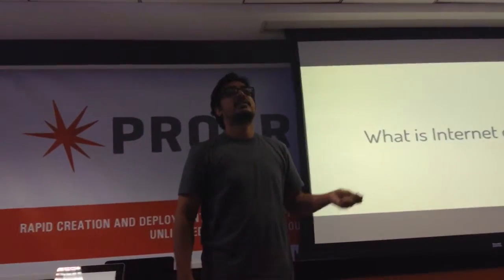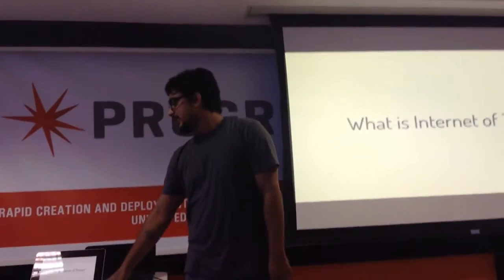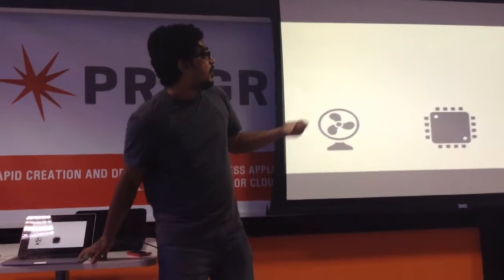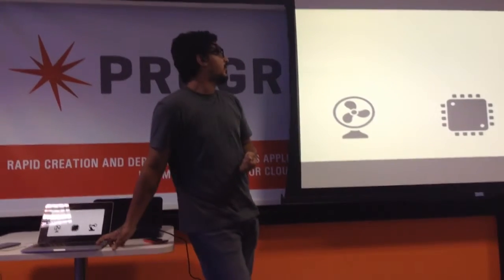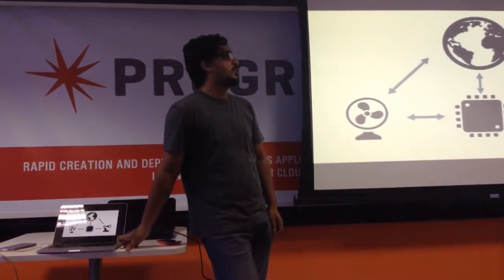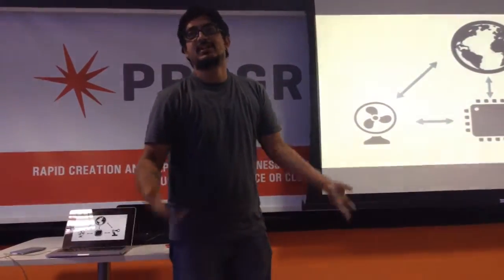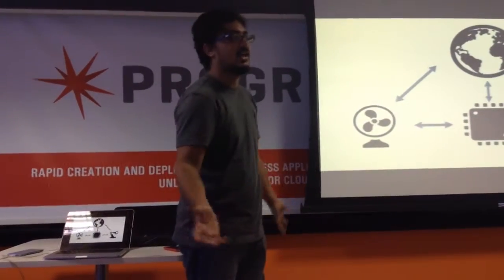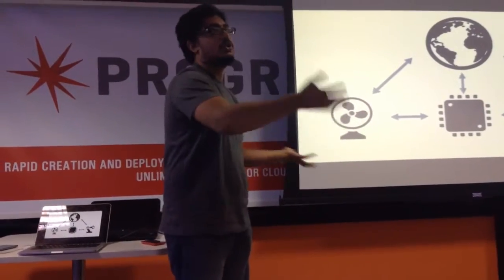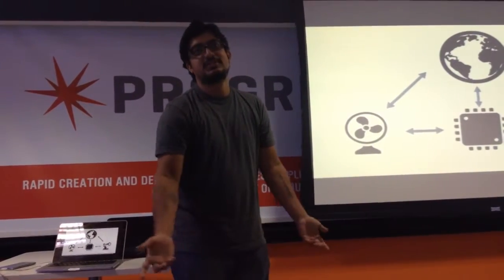Interconnected devices. Basically, Internet of Things is connecting your electrical, your electronic, or your mechanical devices to the Internet so that they can talk to each other. That's it — that is IoT. There's nothing more than that. You have a chair, and if the chair wants to talk to the Internet, that's called Internet of Things.